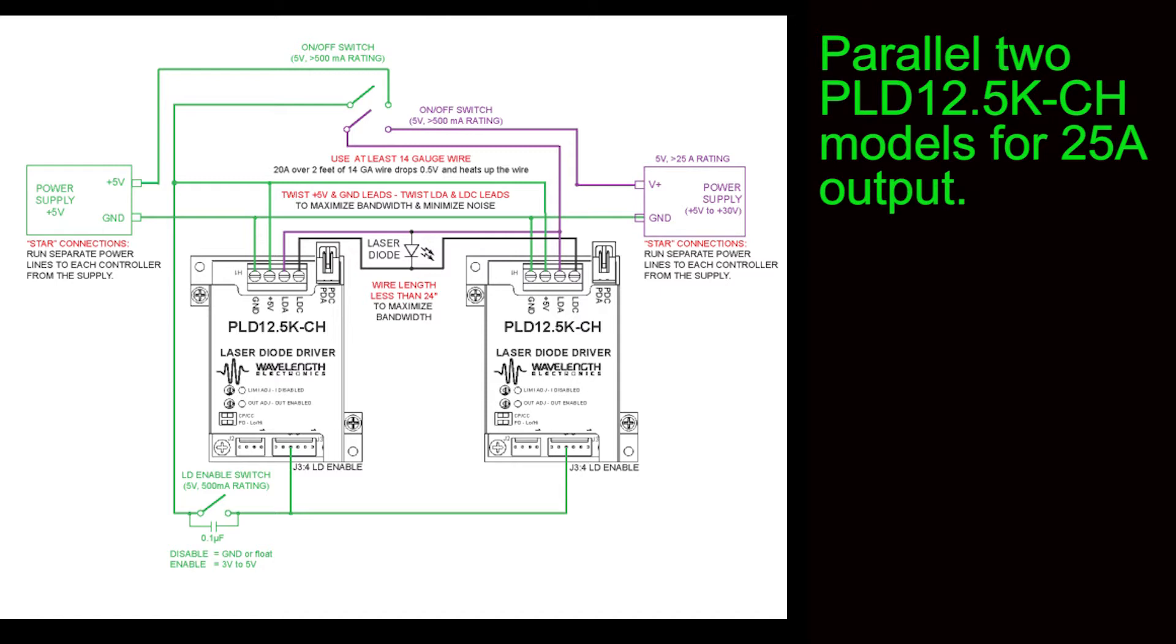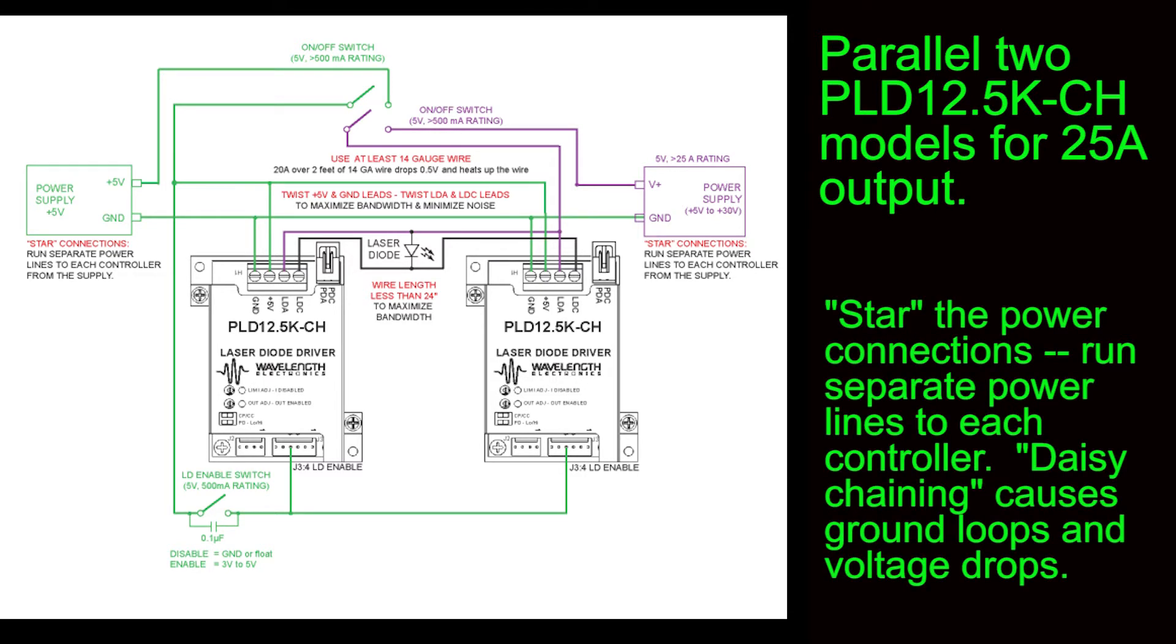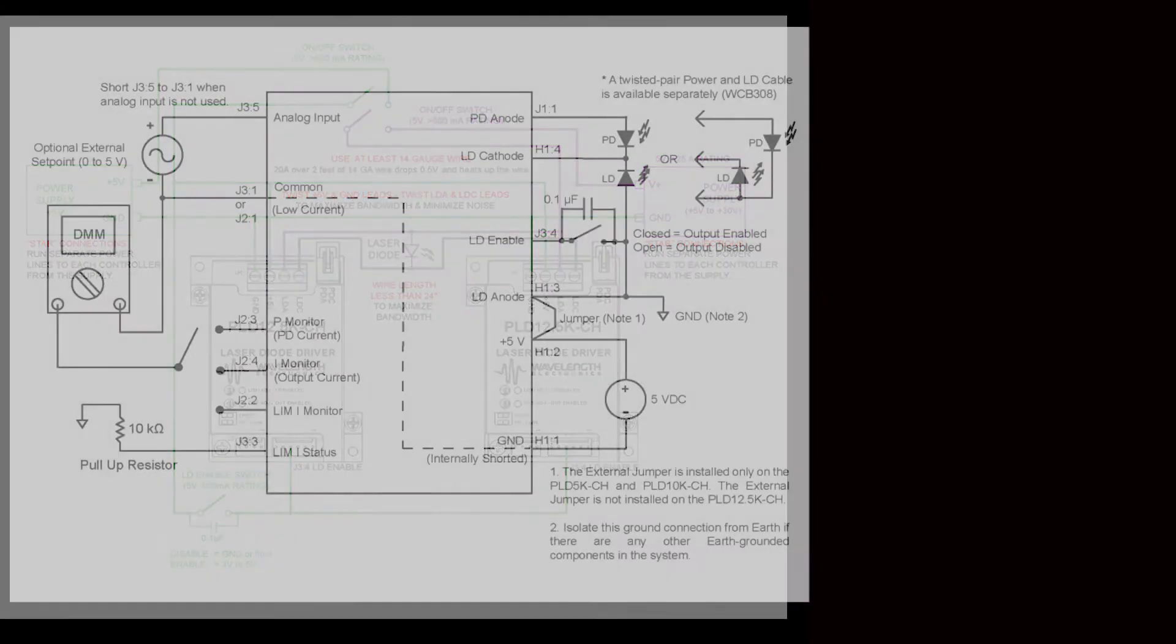The PLDs are designed to be very flexible. For example, the higher current PLDs can be paralleled to drive up to 25 amps. Make sure that the power supply connections are stored. This means separate power lines are run to each controller. Daisy chaining power supply inputs causes ground loops and voltage drops. This applies to all products.